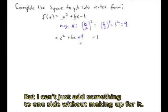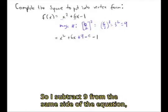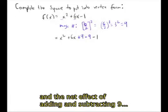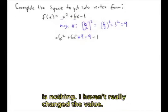But I can't just add something onto one side of an equation without making up for it. So I subtract 9 from the same side of the equation. And the net effect of adding 9 and taking 9 away is nothing. I haven't really changed the value.